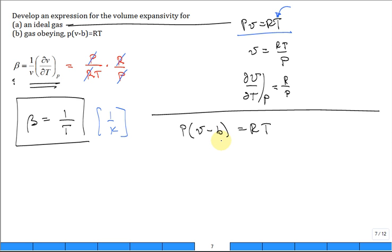Let's do the same thing, calculate beta analytically for this gas obeying this equation of state. Rearrange it such that you get V is equal to B plus RT over P.